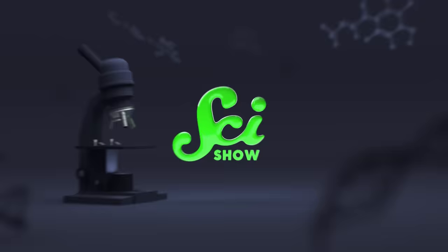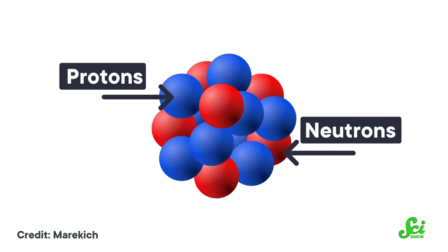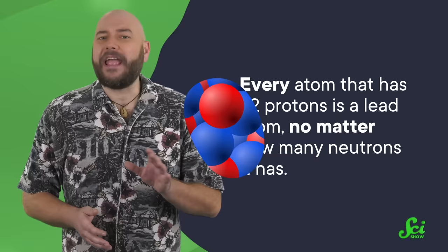Before we get to any magic, we should start with some nuclear physics basics. The nucleus of an atom is made up of particles collectively called nucleons — you may know them better as protons and neutrons. It's the number of protons that determines which element an atom is. Every atom that has 82 protons is a lead atom, no matter how many neutrons it has.